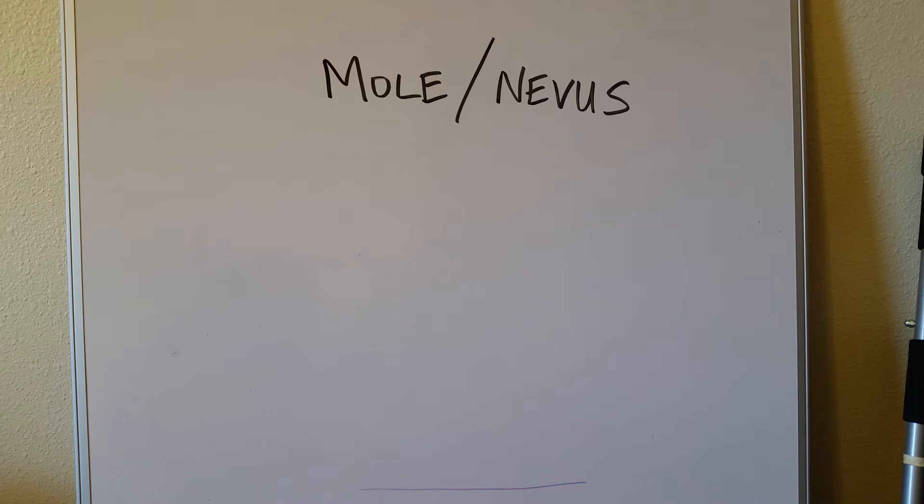Moles, as most of us know them, are little brown or darkly colored spots on our skin. Moles are benign collections of melanocytes, melanocytes being the cells in our skin that produce melanin, which is the main pigment, the color of our skin. So if there's a collection of those cells that produce the pigment, that's why they're darker.